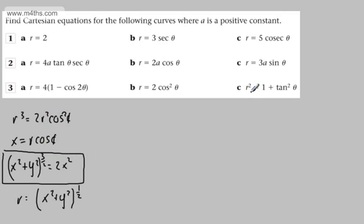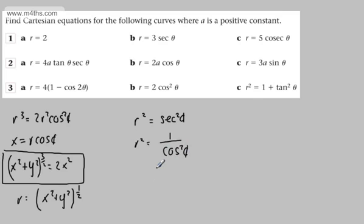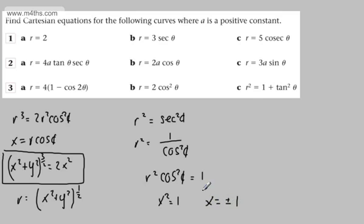For r² equals 1 plus tan²theta, recognise that 1 plus tan²theta equals sec²theta, so r² equals 1 over cos²theta. Multiplying both sides by cos²theta gives r² cos²theta equals 1. Since r cos theta is x, we get x² equals 1, so x equals plus or minus 1 — nice and straightforward.